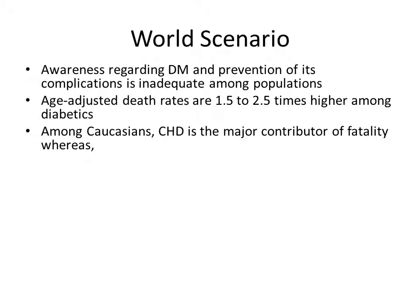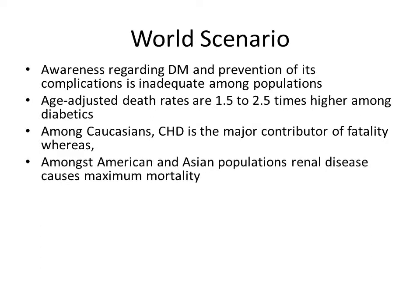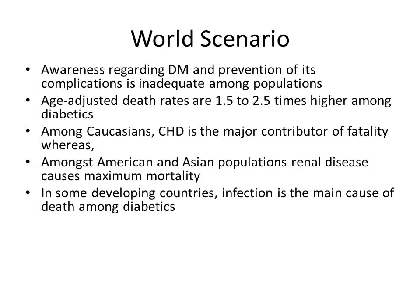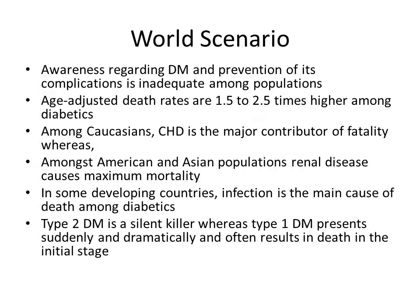Among Caucasians, coronary heart disease is the major complication leading to fatality in diabetics. Whereas among American and Asian populations, renal disease causes maximum mortality. In certain poor developing countries, infection is the main cause of death among diabetics. Type 2 diabetes mellitus is a silent killer, whereas type 1 presents suddenly and dramatically, and may often result in death in the initial stages. Type 1 diabetes mellitus prevalence was lower in Asia compared to the rest of the world.